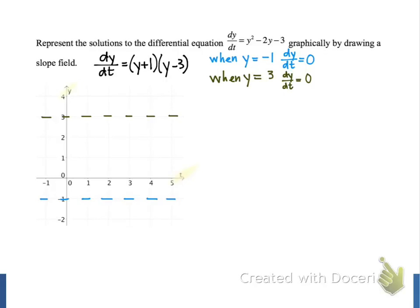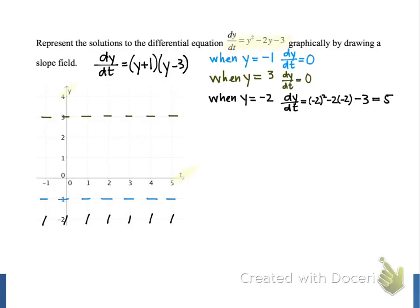For our other y values, we need to work a little bit harder to find the value of dy/dt. Let's start at the bottom of our slope field with y equal to negative 2. We go back to using the original form y squared minus 2y minus 3. When we evaluate this at y equals negative 2, we get negative 2 squared minus 2 times negative 2 minus 3, and when we simplify, our result is 5. So we're going to draw tangent lines at y equals negative 2 with a steep positive slope.